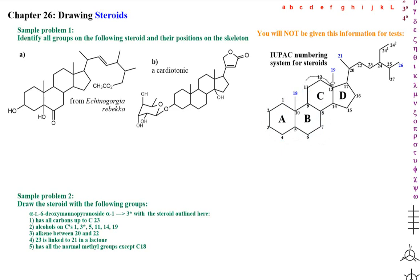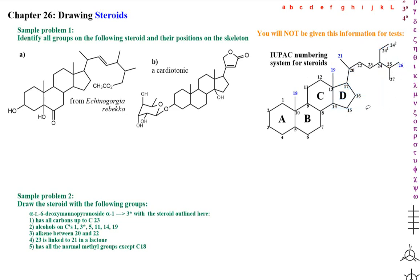It goes in the middle and then around, because steroids almost always continue outside of the rings with carbon-20. Notice it's 20 because we've already used 18 and 19 for the methyls. Continuing: 22, 23, 24. It is quite uncommon but not impossible to have a group off of 24. And 25 — 26 is a methyl. Longer steroids end at 27.